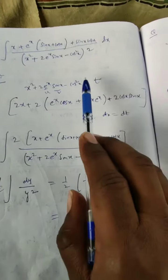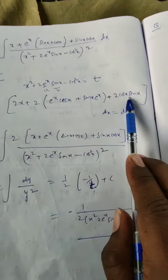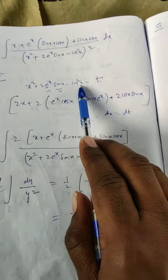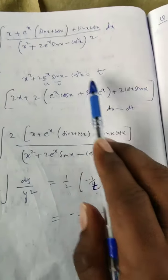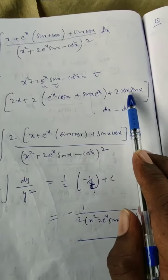Plus keeping sin x same as it is, differentiation of e^x is e^x. Actually here minus, but cos² x differentiation is 2 cos x, and cos x differentiation is minus sin x. So that minus into minus becomes plus. Cos² x differentiation is 2 sin x cos x. This whole dx is equal to dt.